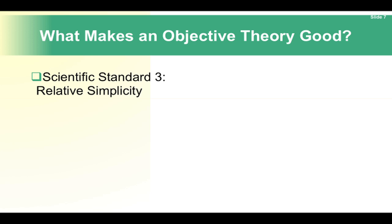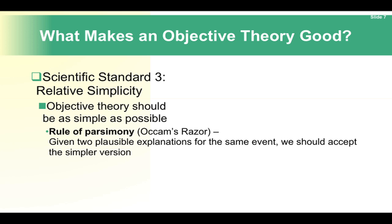Scientific Standard 3: Relative simplicity. The rule of parsimony, also known as Occam's razor, states that given two plausible explanations for the same event, we should accept the simpler version.